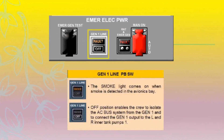On the GEN 1 line pushbutton switch, the smoke light comes on amber when smoke is detected in the avionics bay. The off position enables the crew to isolate the AC bus system from GEN 1 and to connect the GEN 1 output to the left and right number one inner tank pumps.